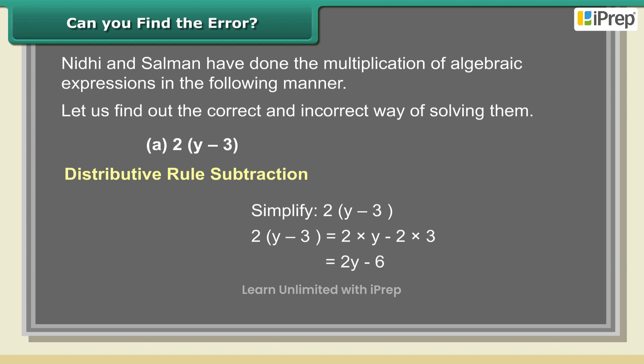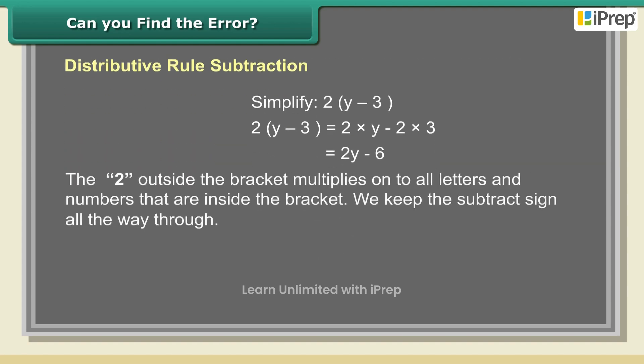The 2 outside the bracket multiplies onto all letters and numbers that are inside the bracket. We keep the subtract sign all the way through. Correct: 2(y - 3) = 2y - 6. Incorrect: 2(y - 3) = 2y - 3.